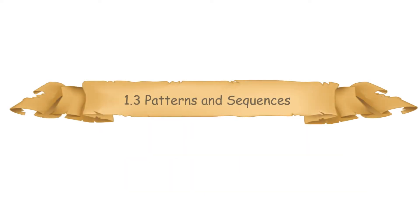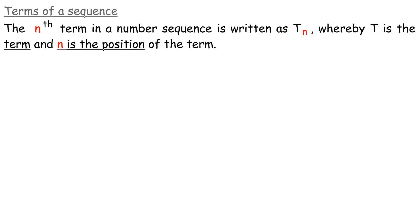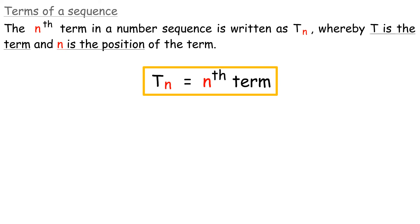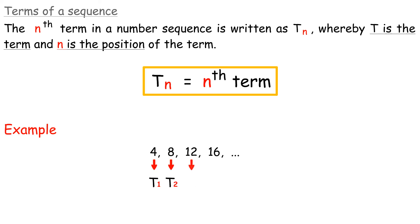Next, let us go to 1.3 Patterns and Sequences. Terms of a sequence: The nth term in a number sequence is written as tn, whereby t is the term and n is the position of the term. Example 1: In the sequence 4, 8, 12, 16 — 4 is t1, 8 is t2, 12 is t3, and 16 is t4.